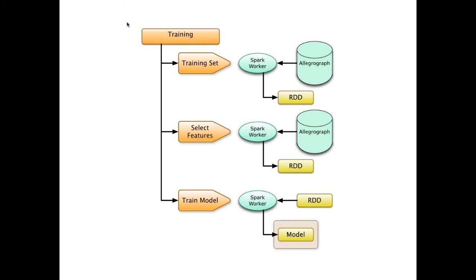We'll be doing our training broken into these three tasks. The first is to do a query against AllegroGraph to pull data into an RDD, which is the Spark data structure for storing data. We'll then be processing that RDD and doing queries against AllegroGraph to pull in the individual features we need for training our model, putting the results into an RDD, then training a new model based on that RDD, and writing that model out to disk.